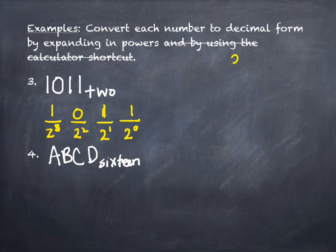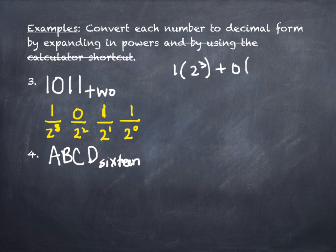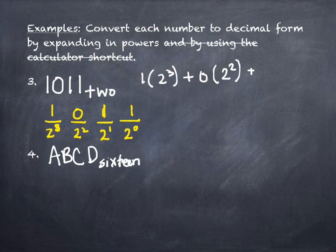In our number system, if we have the number 3046, that '3' means 3 times 1,000 — three thousands. Exactly the same applies here. The 1 in the leftmost position of 1011 base 2 doesn't just mean 1 — it means 1 times 2 cubed. The 0 means 0 times 2 squared. The next 1 means 1 times 2 to the first, and the last 1 means 1 times 2 to the zero. So I write: 1 times 2 cubed, plus 0 times 2 squared, plus 1 times 2 to the first, plus 1 times 2 to the zero.